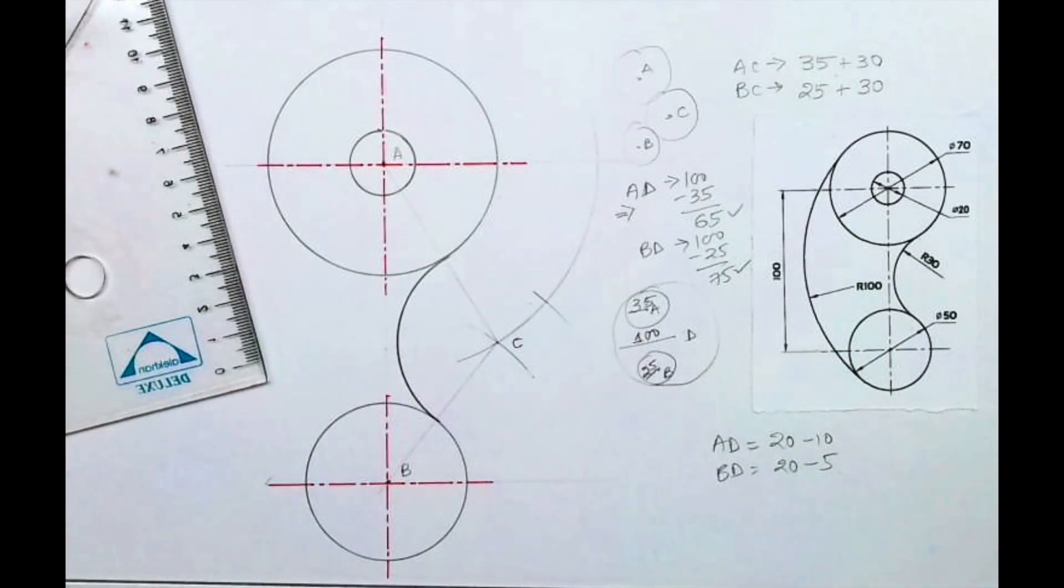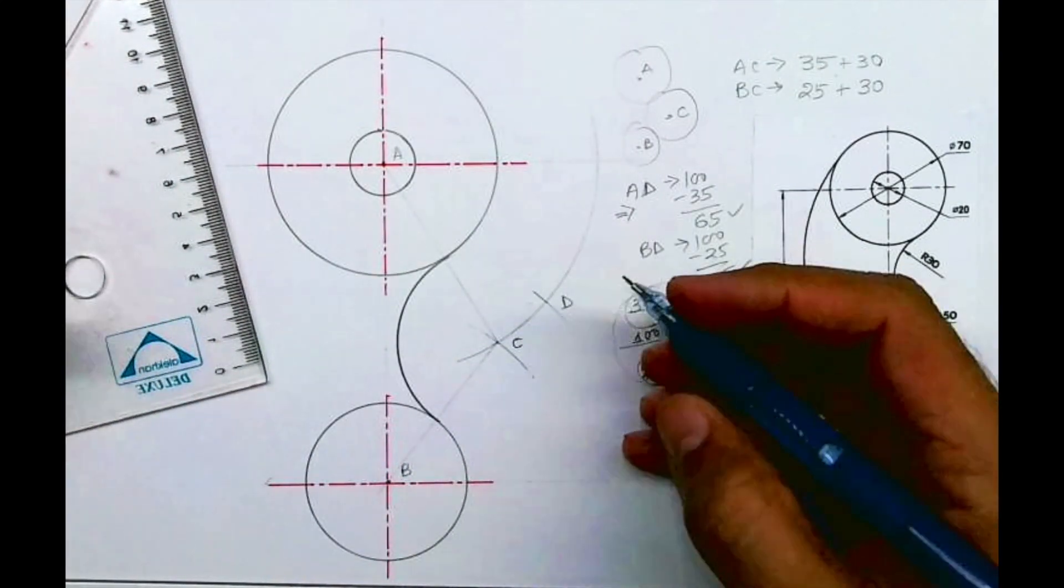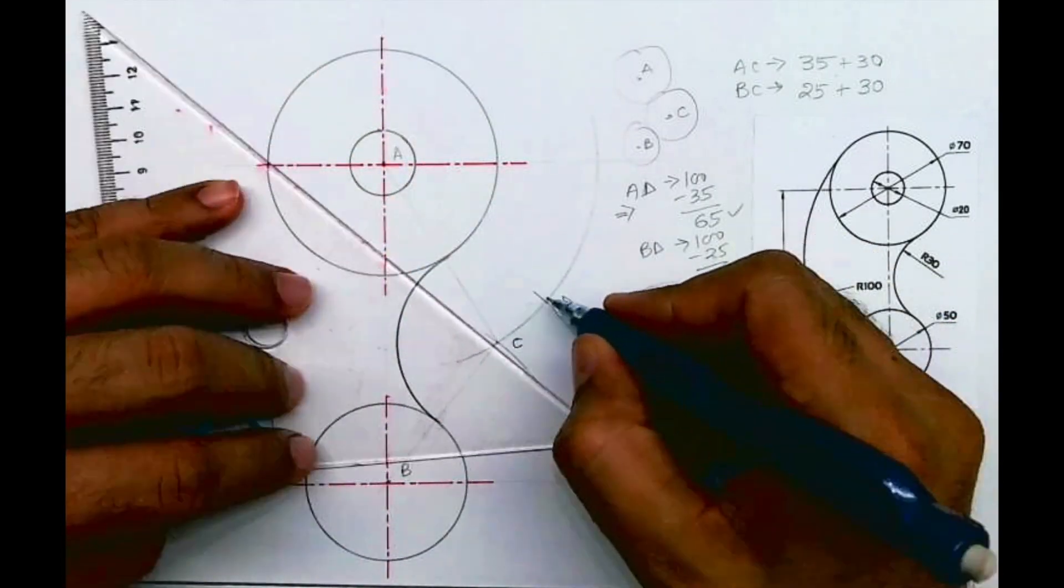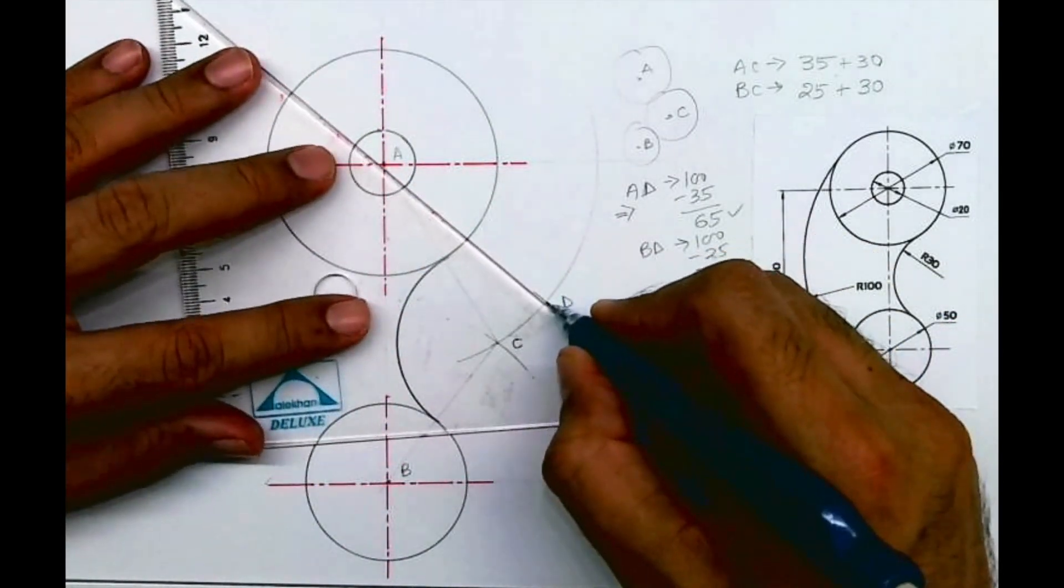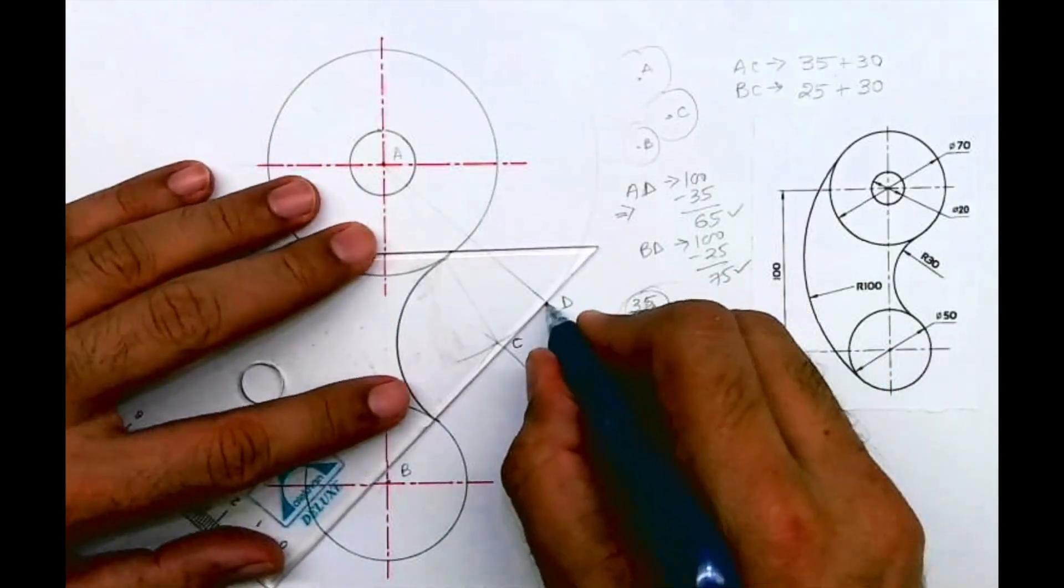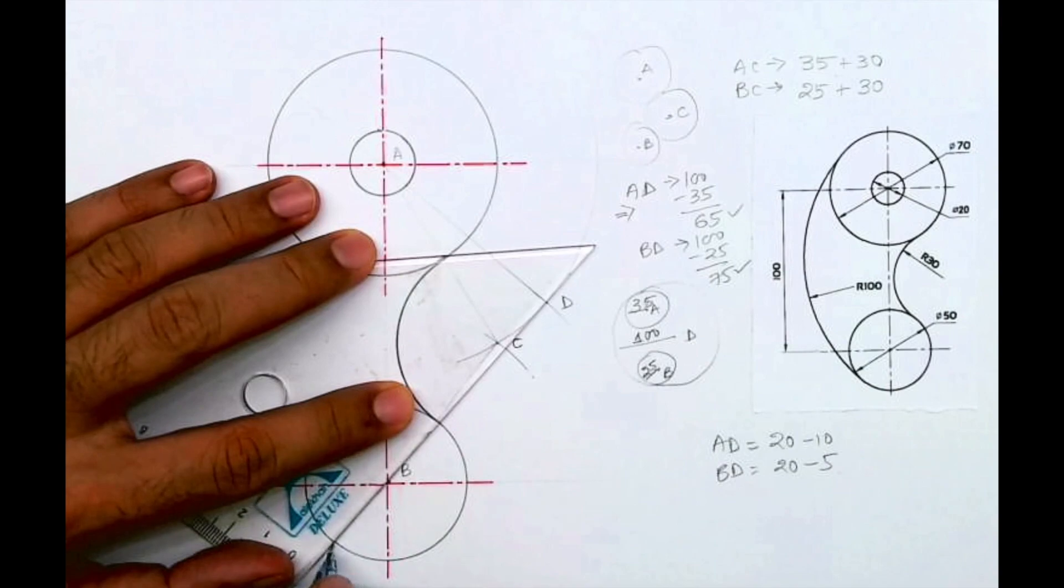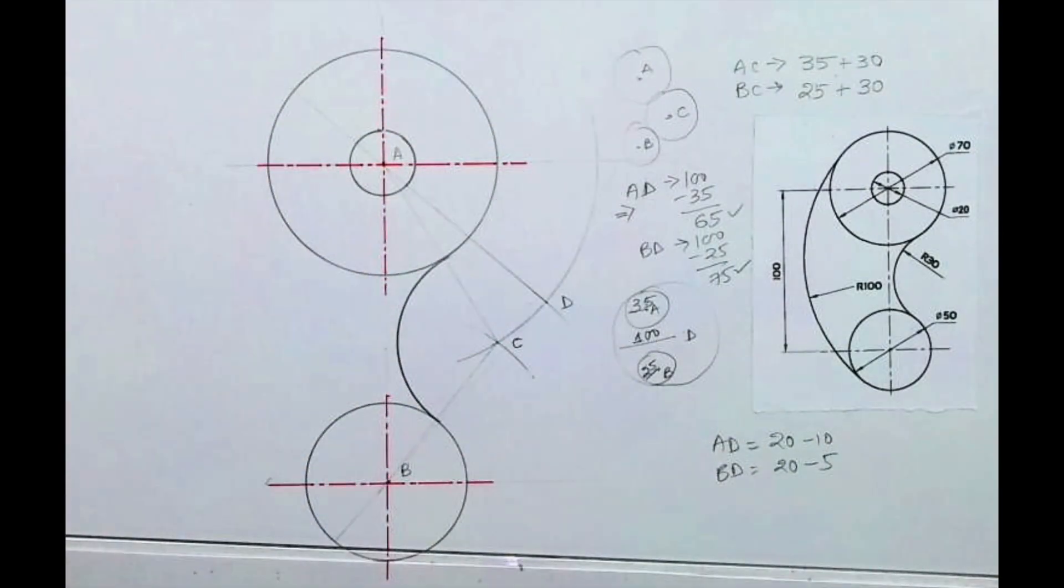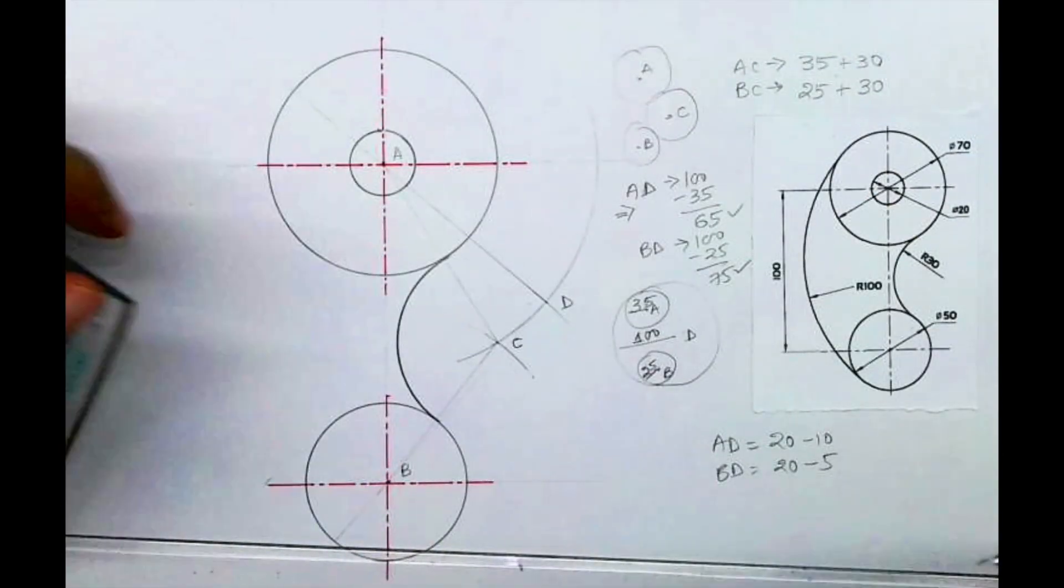Wherever it will cut, that will be point D. Again, you can join D to A and extend the line to get the exact point from where your arc is going to start, and D to B and extend the line. This is optional. You can take directly from D at 100 and draw an arc.